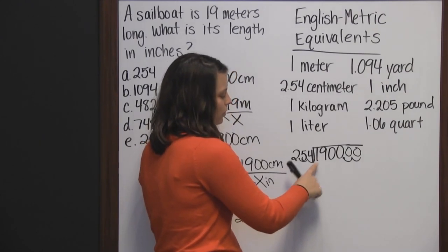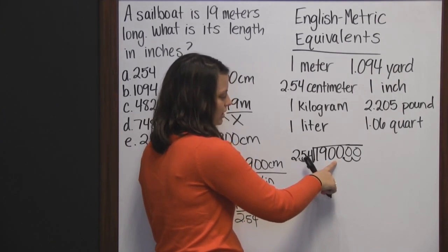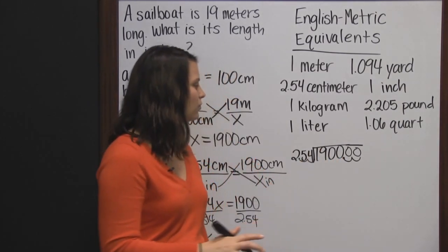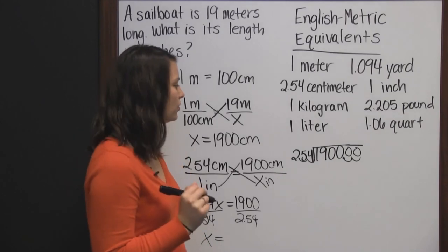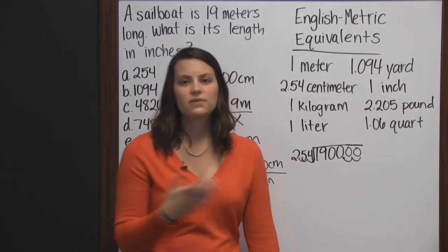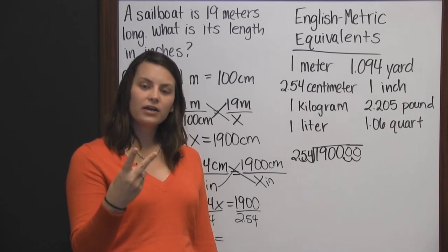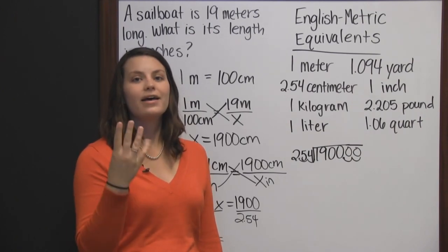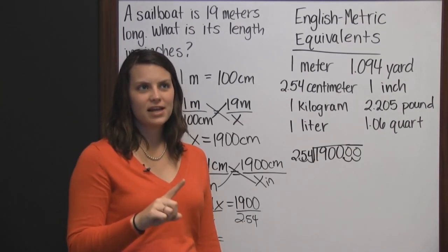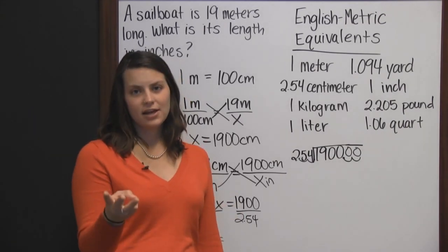So 254 does not go into 1, into 19, or into 190, but it does go into 1900. We can use compatible numbers — 254 is very close to 250. So 250, 500, 750, 1000, 1250, 1500, 1750 — and then 2000 would be too much. So it only goes 7 times.